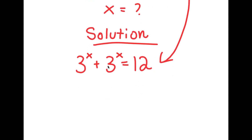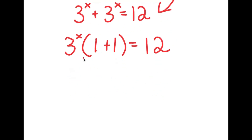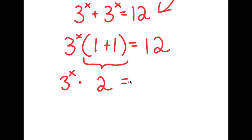For my solution, I'm going to start by rewriting my equation: 3 to the power of x plus 3 to the power of x is equal to 12. On my left-hand side, I'm going to factor out 3 to the power of x. So I get 3 to the power of x times 1 plus 1 is equal to 12. And 1 plus 1 equals 2, so I get 3 to the power of x times 2 is equal to 12.